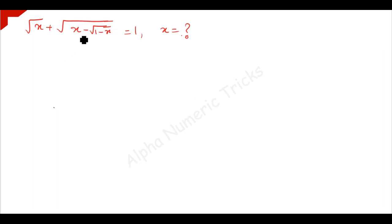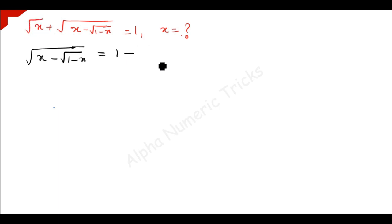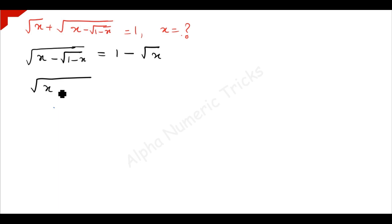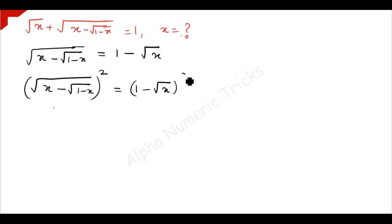What we have to do is take the term square root of x minus square root of 1 minus x to the left-hand side and take square root of x to the right-hand side, so it becomes minus square root of x. Now to remove this square root, we square both sides: square root of 1 minus square root of x, the whole square, is equal to 1 minus square root of x, the whole square.